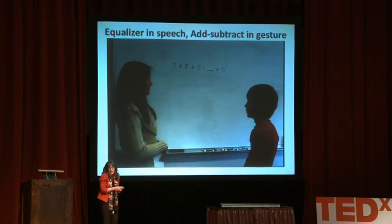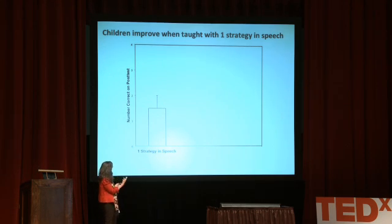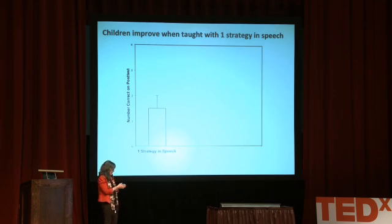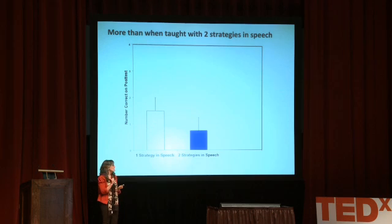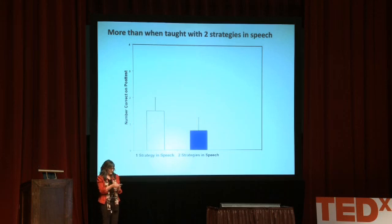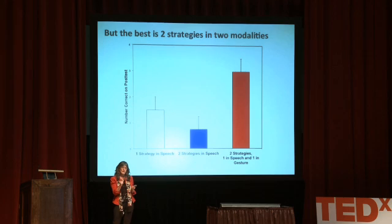We wanted to see what happens when we give kids words or gestures like that. First we gave them the equalizer strategy — one strategy in speech — and they got a little bit better. Then we gave them two strategies in speech — we thought that would be great, but it turns out it's a terrible idea. Children do much worse with two strategies in speech than with one. But here's the interesting data: when we gave them two strategies, one in gesture and one in speech, the kids did much better. They learn much better if you have the same information but delivered in gesture and in speech.